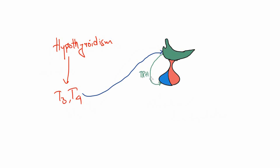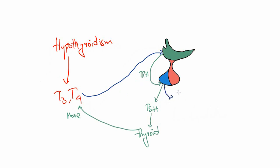In response to hypothyroidism, TRH produced from the hypothalamus stimulates the anterior pituitary to produce thyroid stimulating hormone (TSH), which eventually acts on the thyroid to produce more T3 and T4. Interestingly, this TRH also causes an increase in prolactin levels by stimulating the cells which produce prolactin — hence prolactin levels increase. Ruling out hypothyroidism is one of the common steps in evaluating hyperprolactinemia.